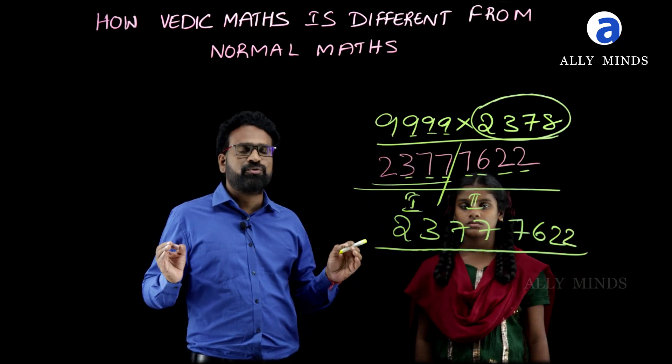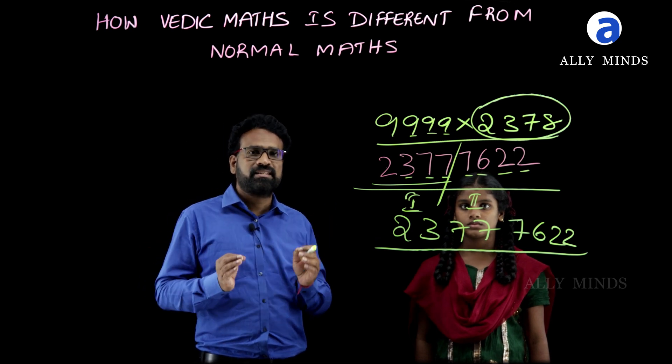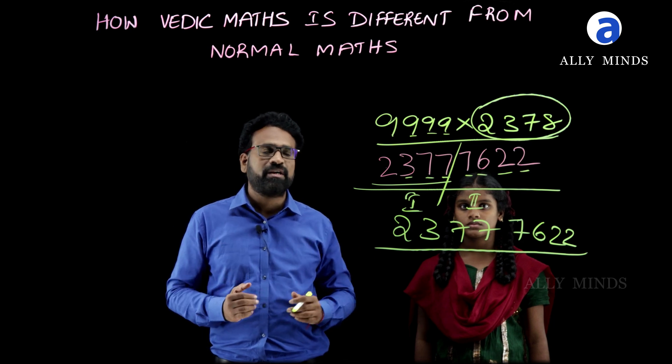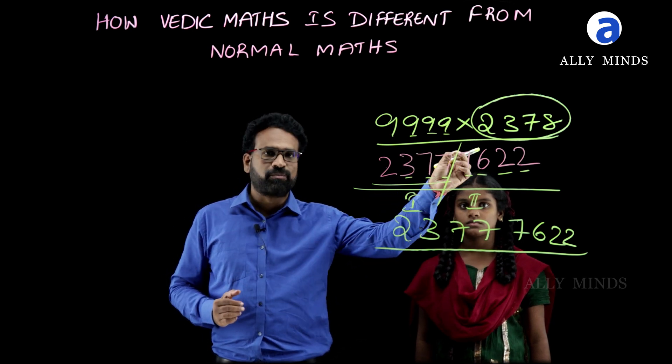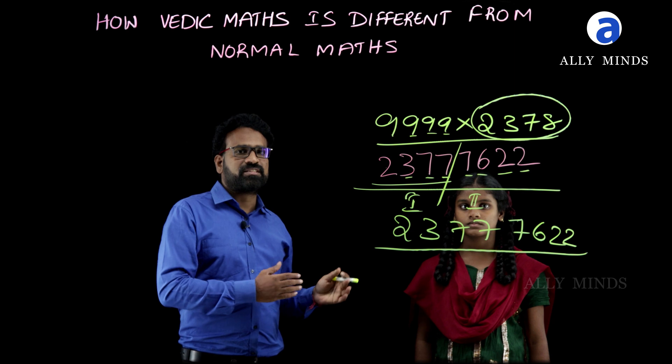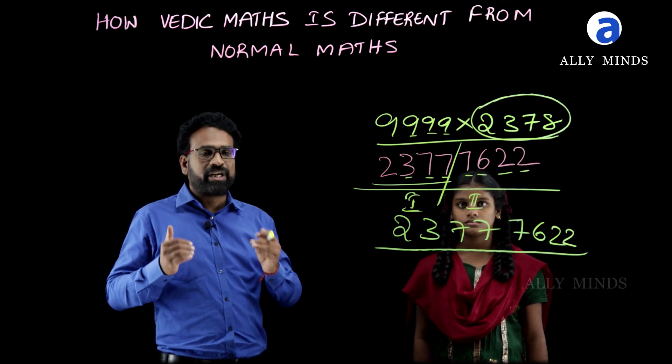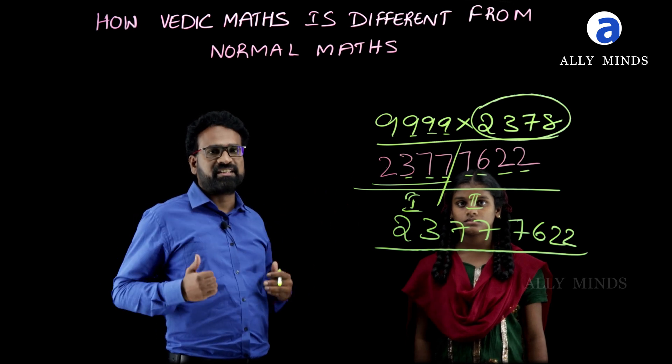Now, she is going to do some problems on Eka Nooniena Purvenam. Eka Nooniena Purvenam means we have to take one less than the number what we are having. We applied Eka Nooniena Purvenam to this problem. For next problems, she is going to apply Eka Adhikena Purvenam. Eka Adhikena Purvenam means she is going to take one more than the number.